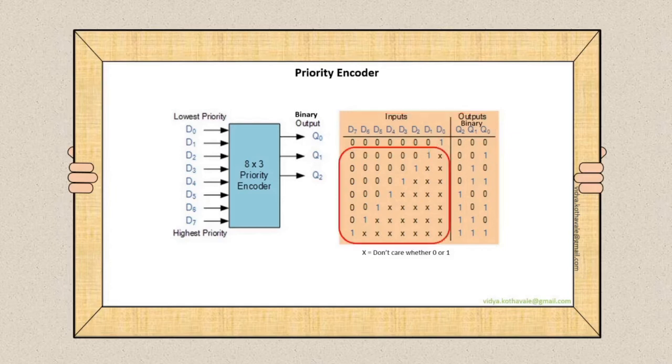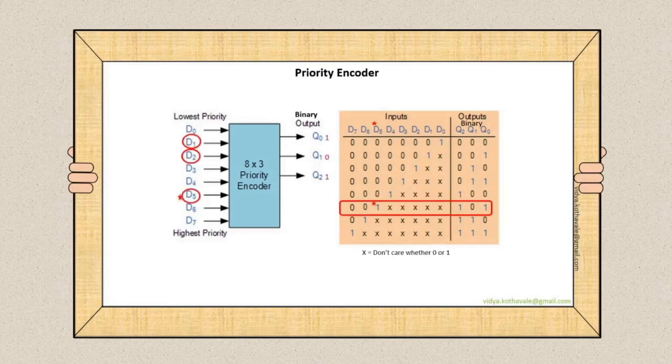But in all other cases, if more than two inputs appear simultaneously, then the one which is having the highest priority, for example here represented with binary 1, will be selected and its equivalent binary output will be obtained at the output.